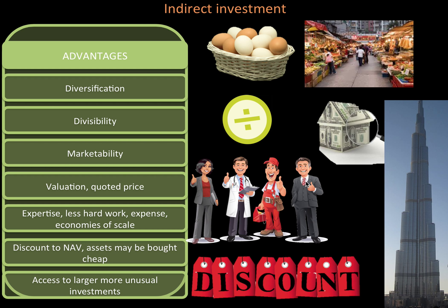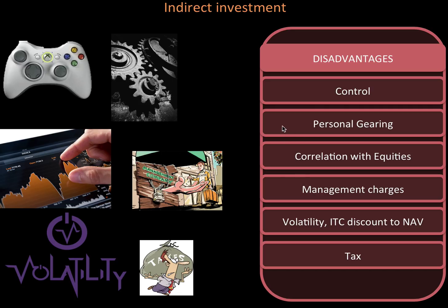Just like there are advantages, there are also disadvantages of indirect investments. You lose control and the ability to do personal gearing. By investing with these schemes, you become correlated with equities, so if you're trying to get diversification across asset classes, you will lose it. You also have to pay management charges, which can be quite high. You're introducing more volatility, and there might be tax disadvantages — though tax could be a pro or a con depending on what country you live in.